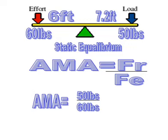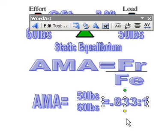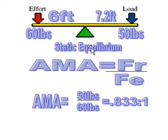So AMA is 50 divided by 60. And so the answer is, once again since we're in static equilibrium, the answer is going to be exactly the same as IMA. If we weren't in static equilibrium it would be something different, but since we are, it's exactly the same.